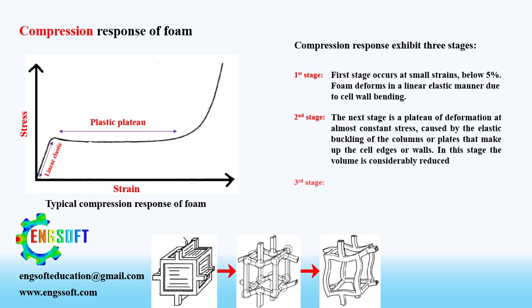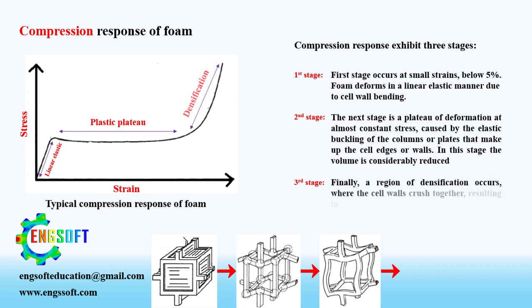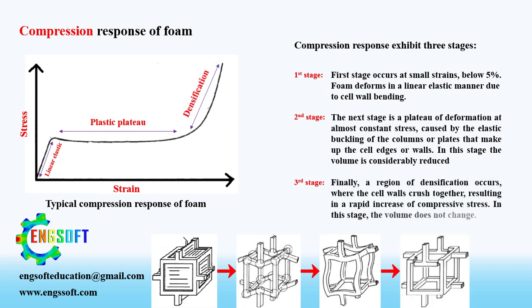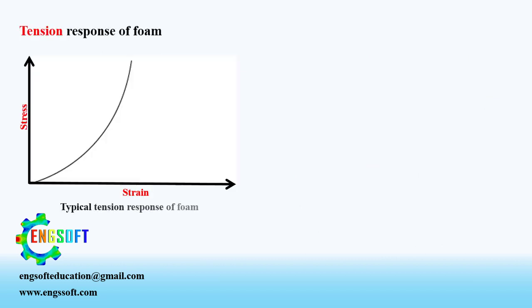Finally, a region of densification occurs, where the cell walls crush together, resulting in a rapid increase of compressive stress. In this stage, the volume does not change. A typical tension stress-strain curve is also shown.